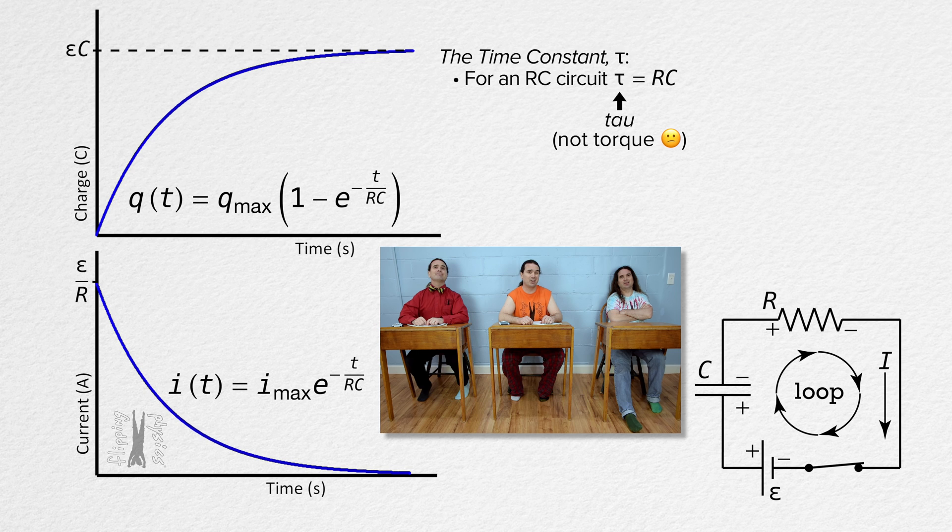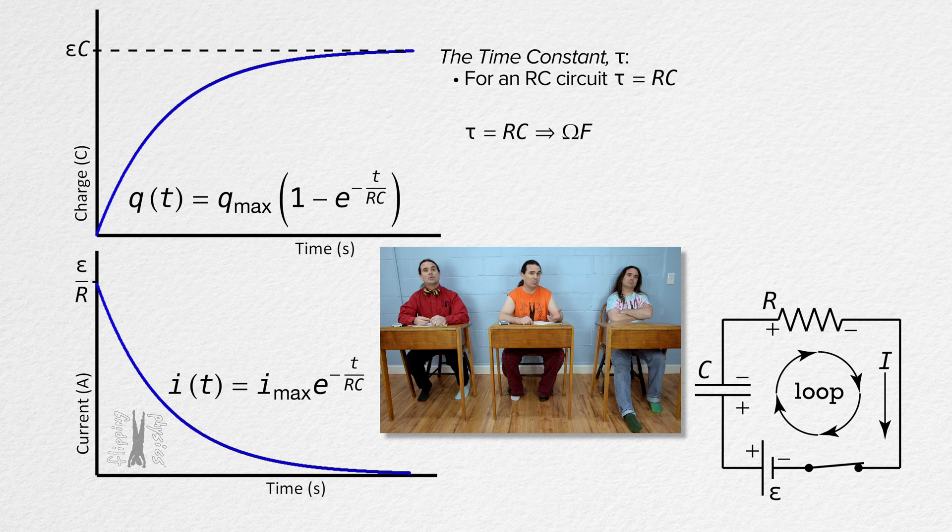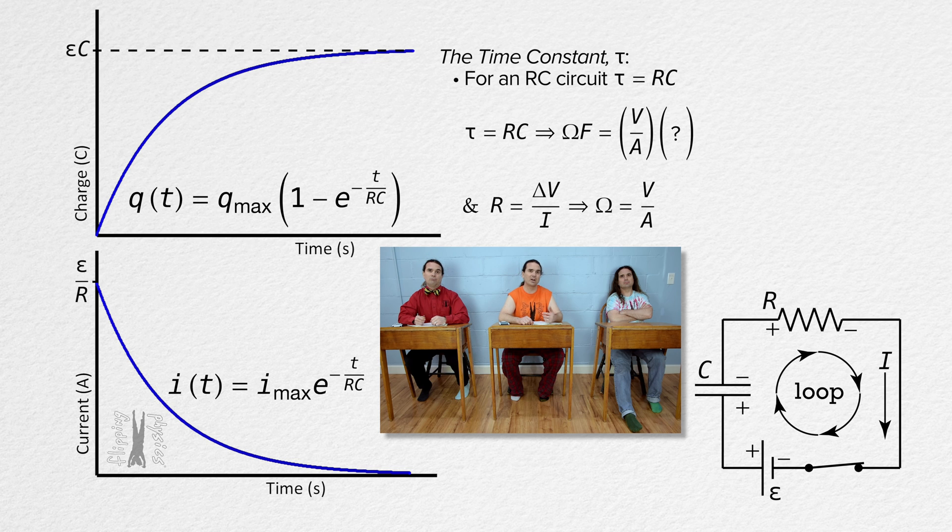The units for the time constant of an RC circuit. Well, the time constant equals resistance times capacitance. The units for resistance are ohms and the units for capacitance are farads. And ohm is, well, resistance equals electric potential difference over current. So ohms are volts over amps.